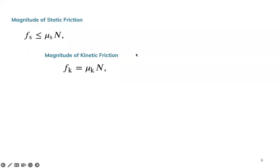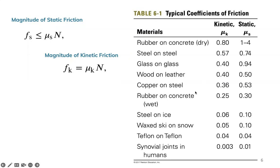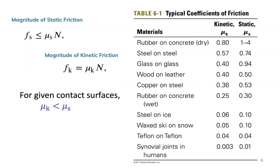To summarize, we have two formulas. Static friction has a maximum, Fs max = μs·N, and kinetic friction is Fk = μk·N. You will see a coefficient table in your textbook — the values may differ by textbook version but the idea is the same: for any given pair of surfaces in relative motion, we look up the corresponding coefficients.